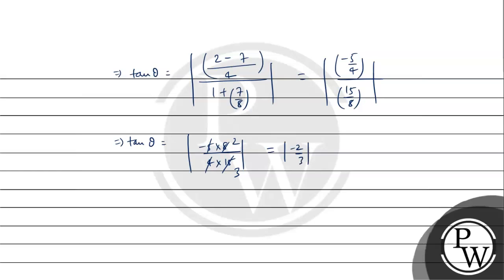Modulus of -2/3. And modulus of -2/3 is 2/3. So, we can write θ = tan inverse (2/3).